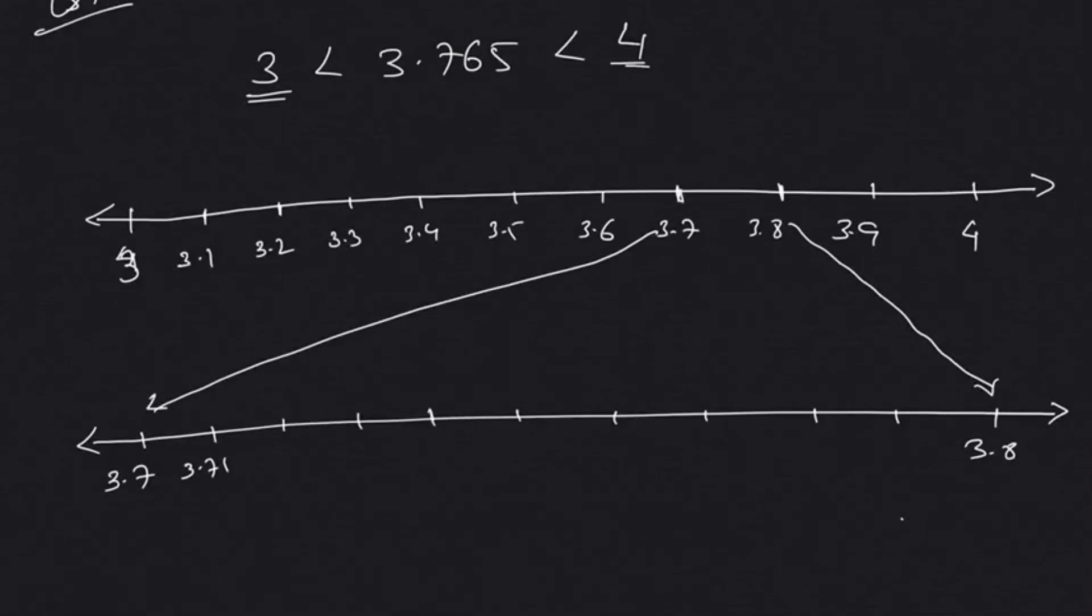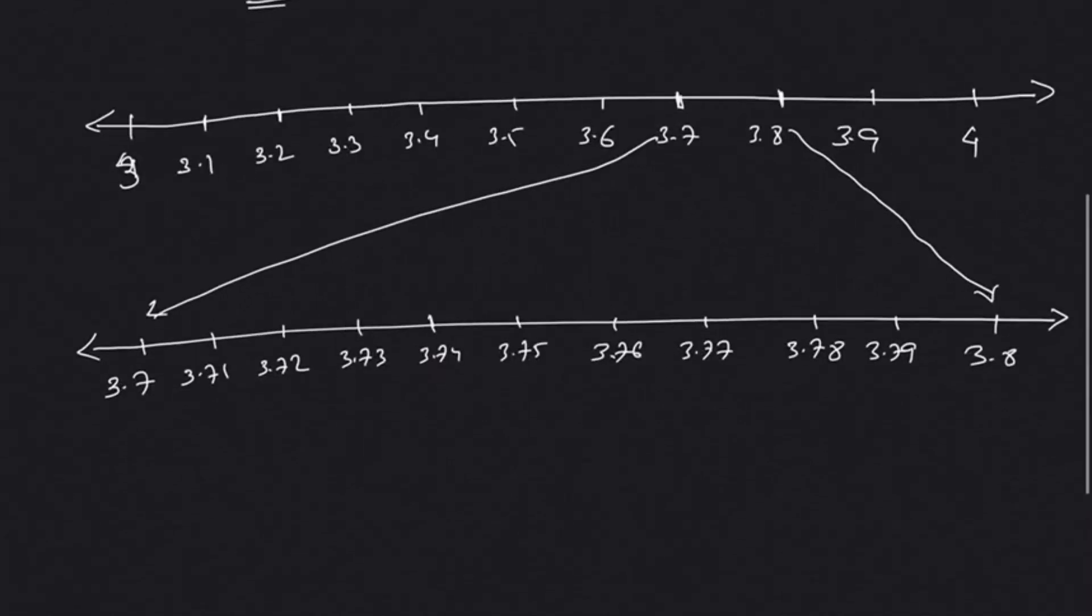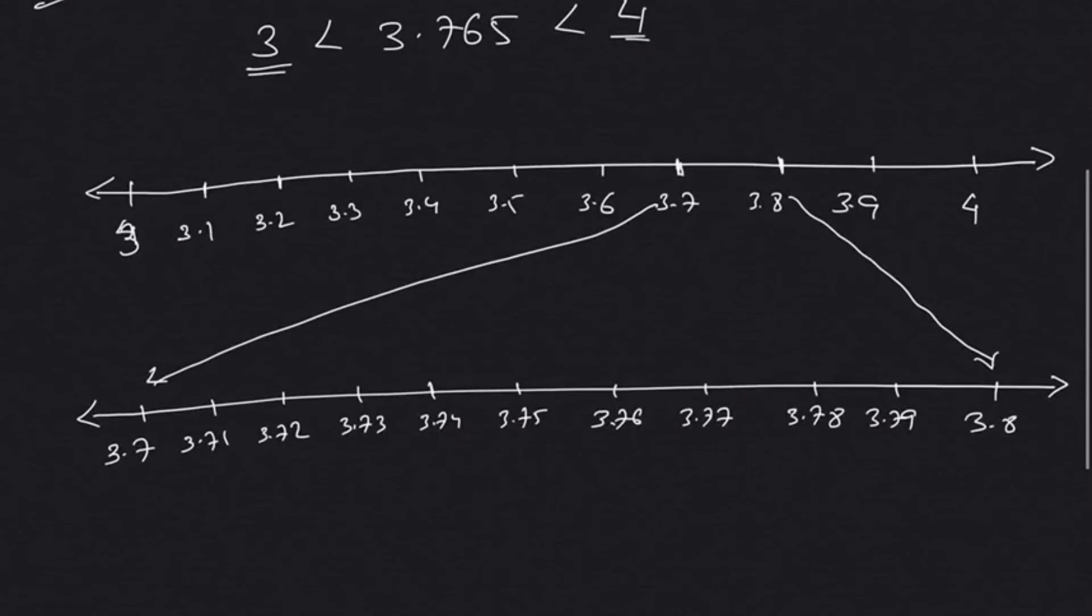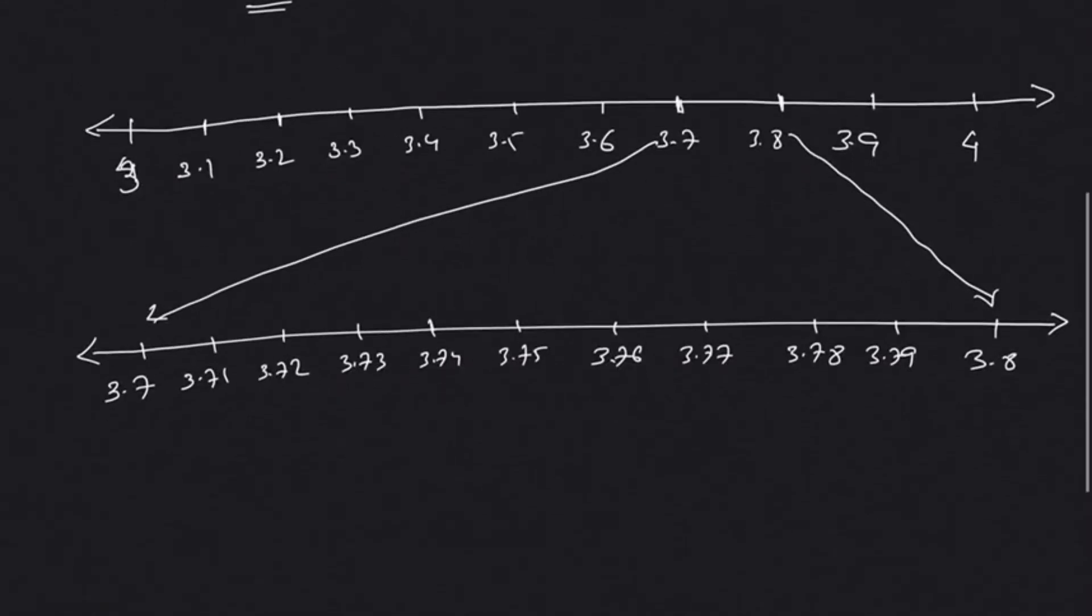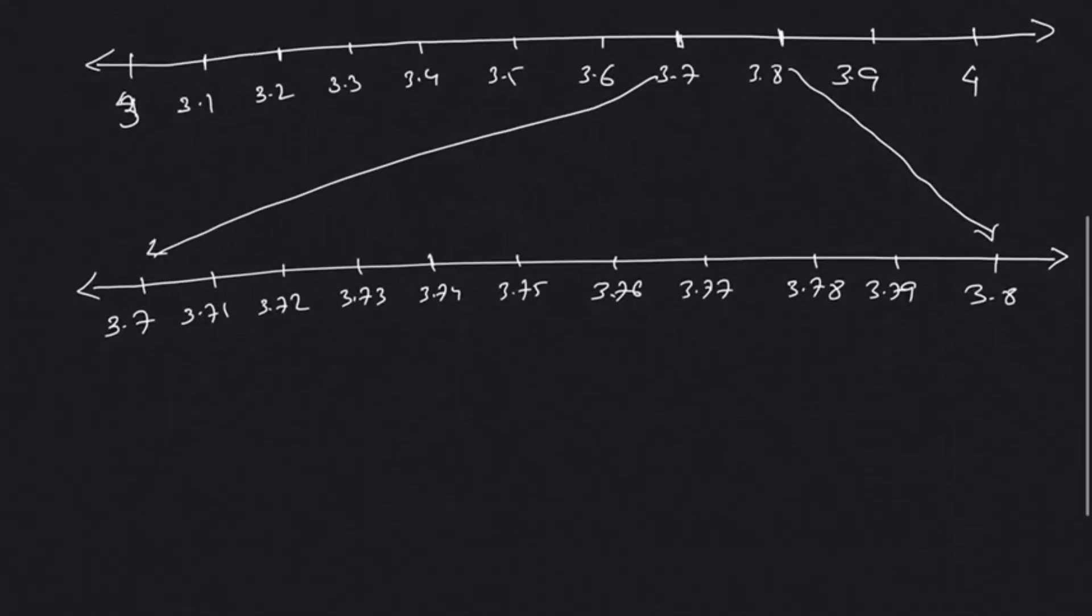So between 3.7 and 3.8: 3.71, 3.72, 3.73, 3.74, 3.75, 3.76, 3.77, 3.78, 3.79, 3.8. Now once that is done, again our number is 3.765, so again we expand it.